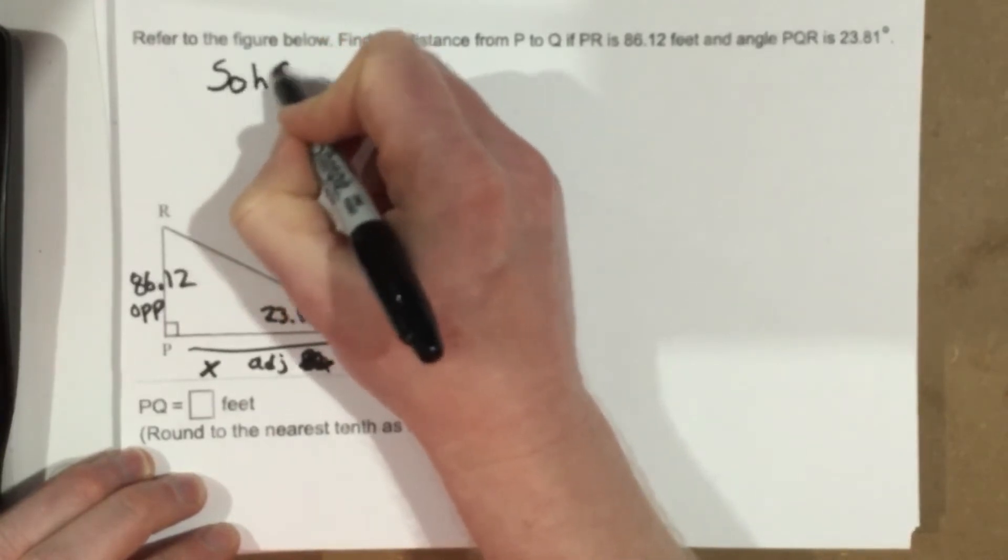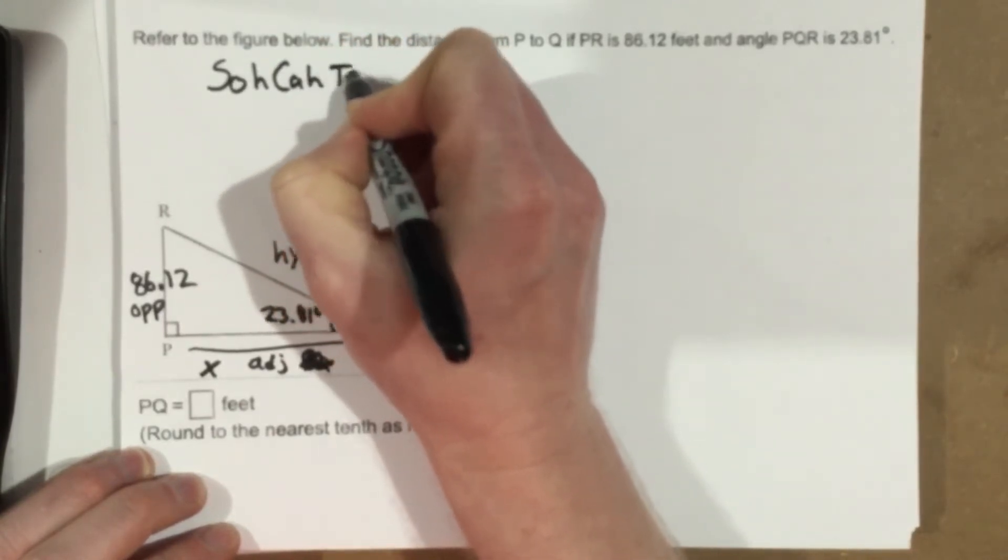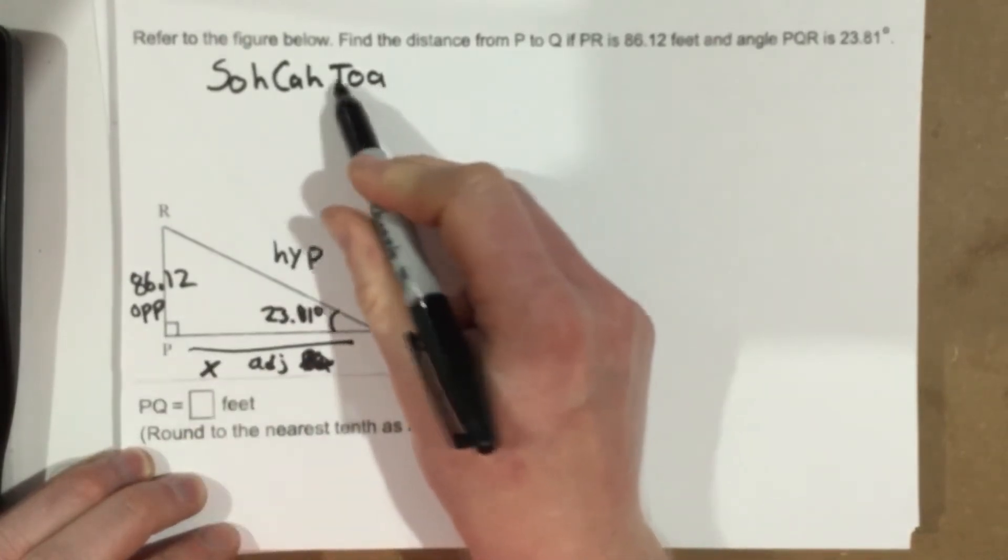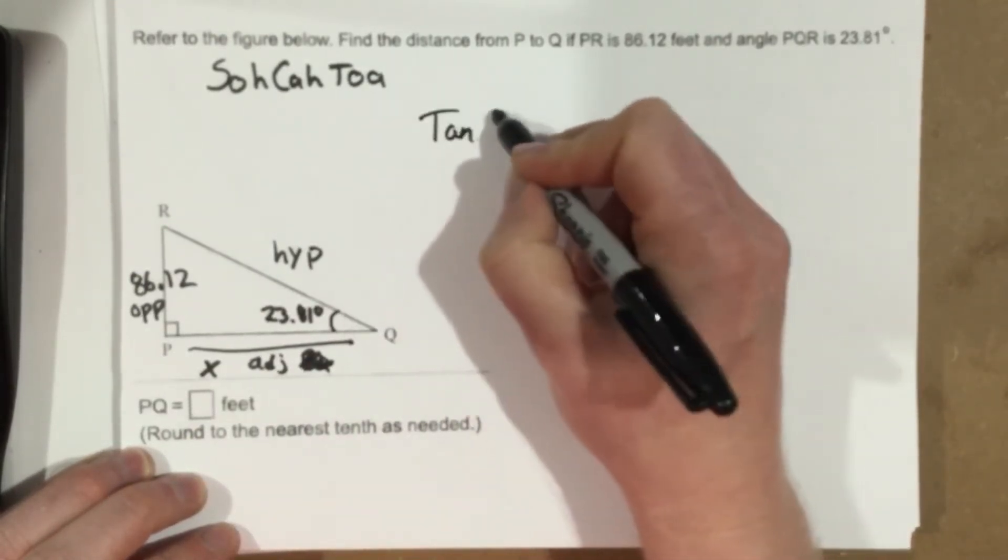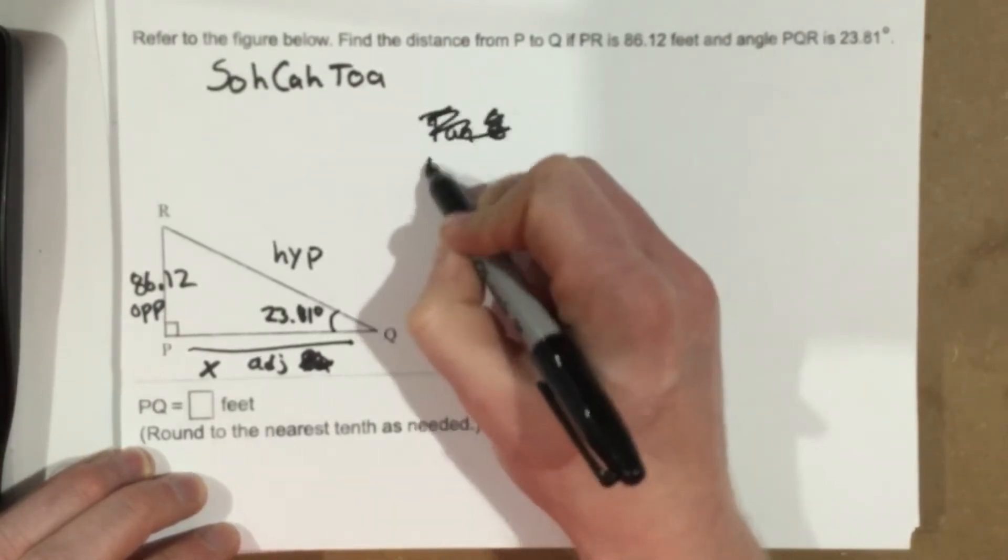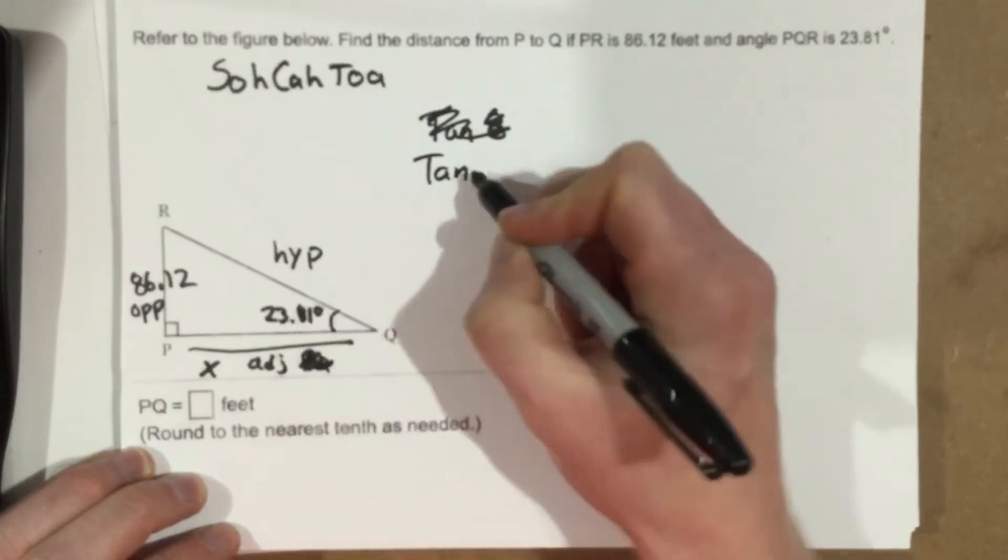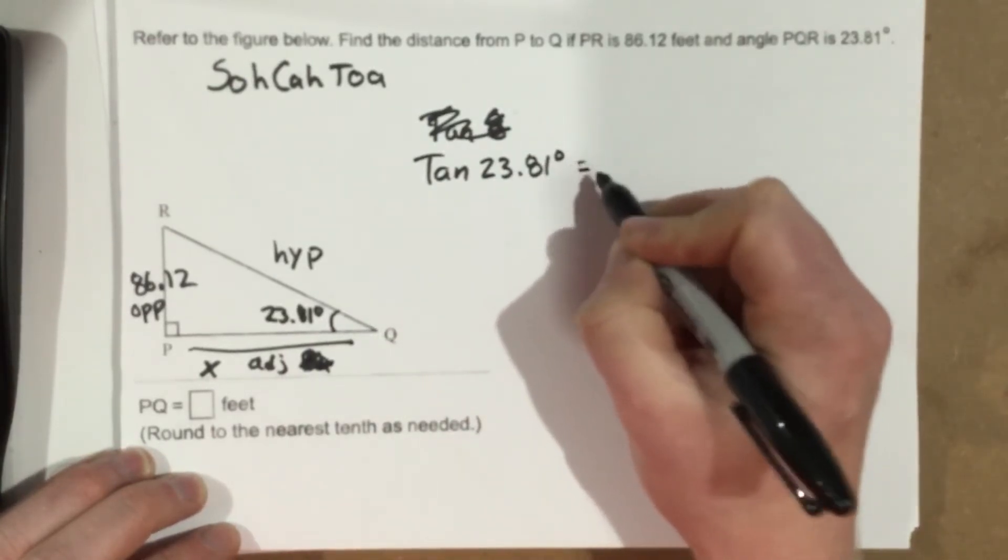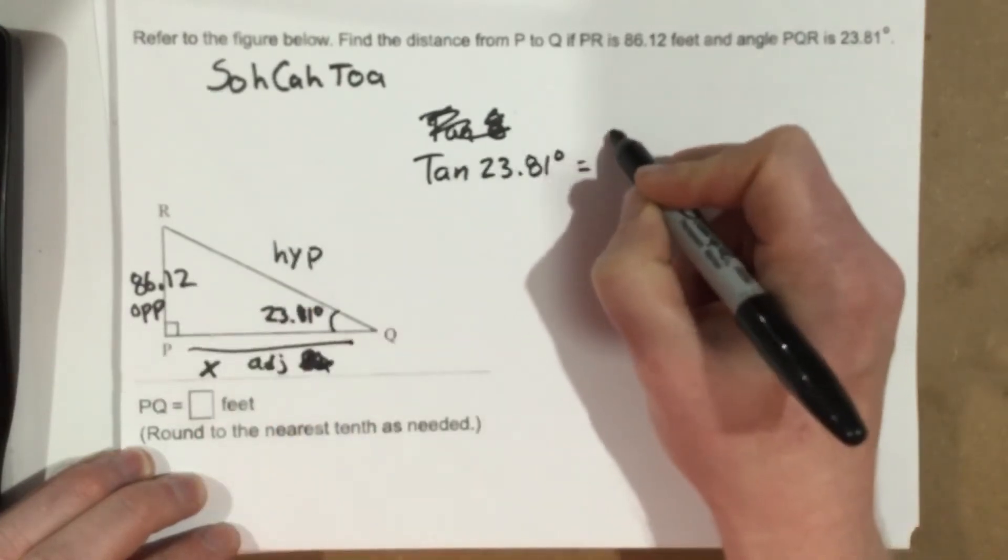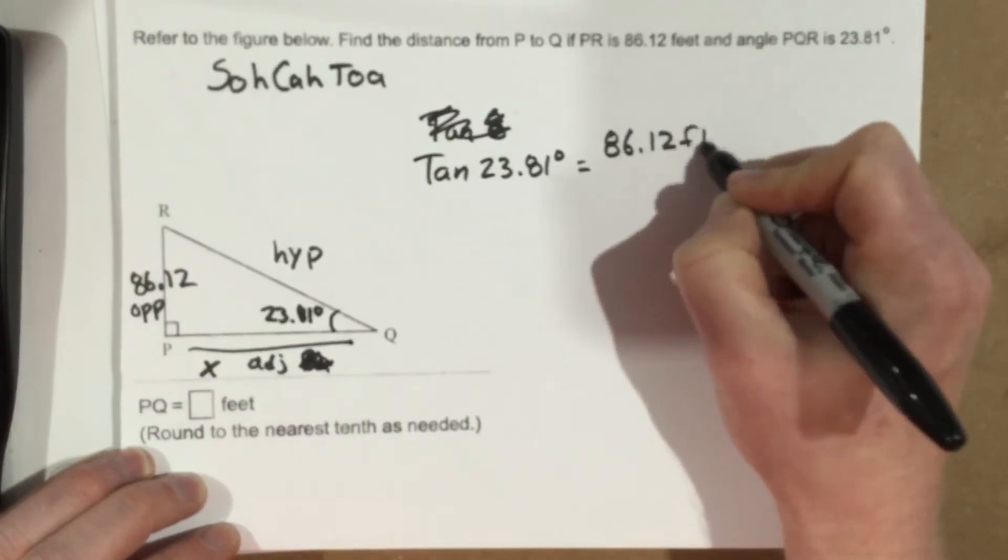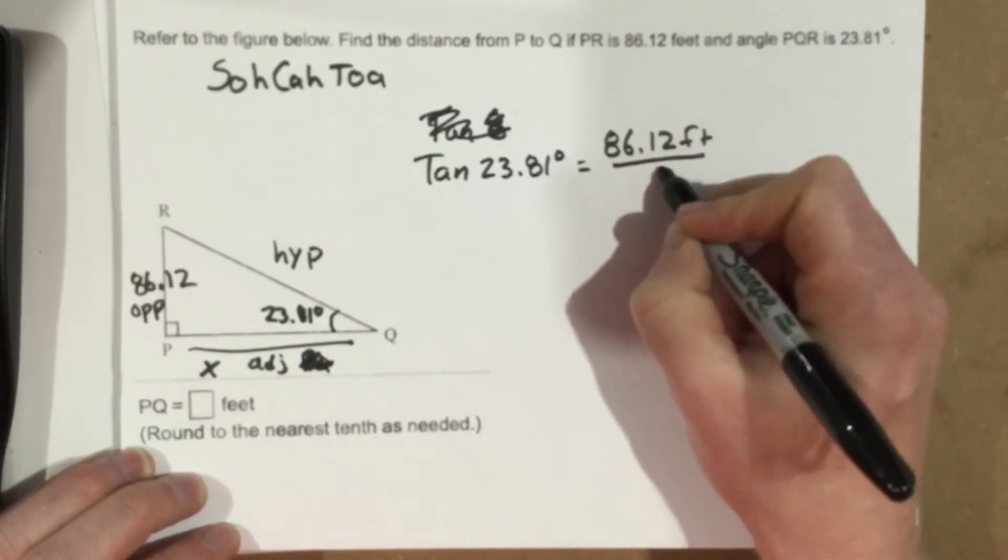So SOHCAHTOA. Opposite adjacent, so opposite and adjacent, that's O and A, which is tangent. So tangent, 86, nope not 86, let's do that again. Tangent of the angle, 23.81 degrees, equals opposite side, which is 86.12, over, and I think that's feet, so we'll put feet there, over X.